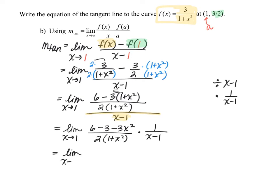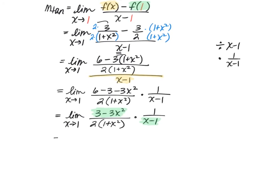Distributing: 6 minus 3 minus 3x² gives us 3 minus 3x², divided by 2 times (1 plus x²), times 1 over (x minus 1). I am not going to distribute in the denominator. Our goal is still to do direct substitution, but we can't because of the (x minus 1) in the denominator. We're hoping to factor the numerator and find an (x minus 1) factor to cancel. The numerator 3 minus 3x² has a common factor of 3, so factoring that out leaves 3 times (1 minus x²). And 1 minus x² is a difference of perfect squares.